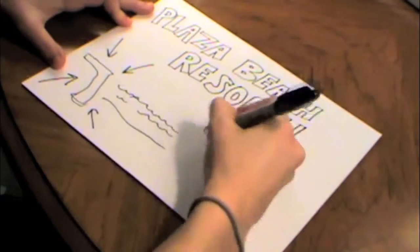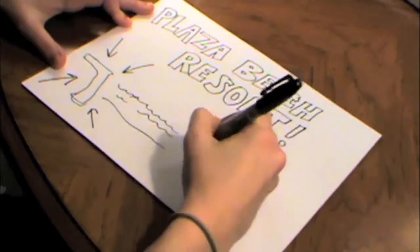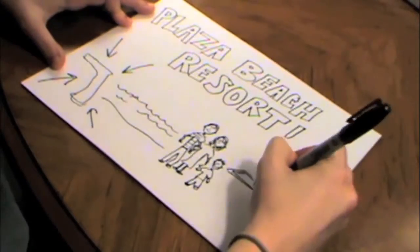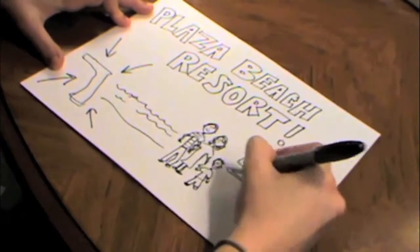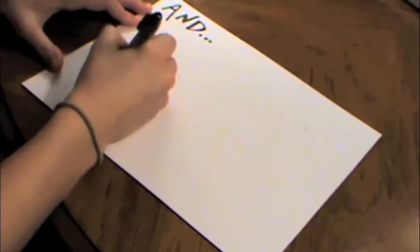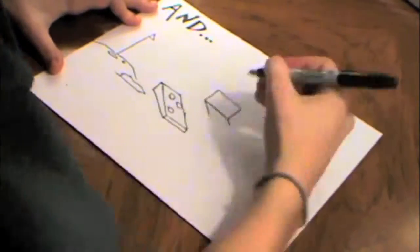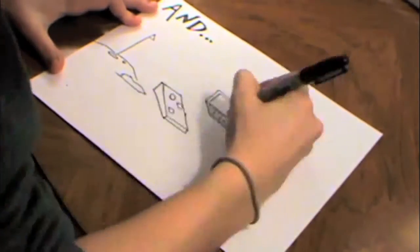With countless options for adventure, it's the perfect getaway for families or groups of friends. In addition to the picture-perfect beach and pool with an ocean view, there's also mini golf, shuffleboard, cornhole, free wifi, and more available right outside your spacious suite.